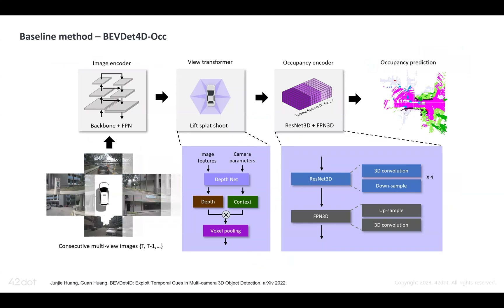Our baseline model consists of three main components: an image encoder to extract image features, a view transformer to transform 2D features into 3D features, and an occupancy encoder to produce occupancy predictions.